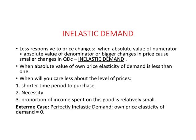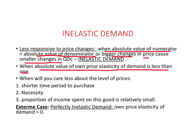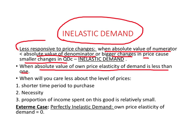Suppose the absolute value of own price elasticity of demand turns out to be less than 1. Just remember the formula: in the numerator we have percent change in quantity demanded, and in the denominator we have percent change in price. When the absolute value is less than 1, the value of the numerator must be less than the value of the denominator. In other words, bigger changes in price cause smaller changes in quantity demanded. This situation is referred to as inelastic demand — this person is less responsive to changes in prices.